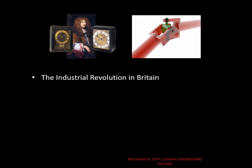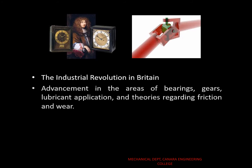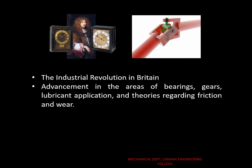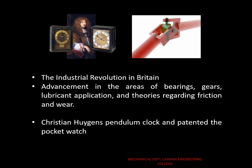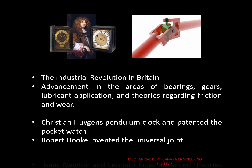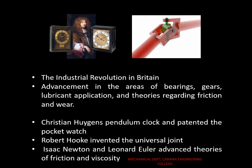Developments prior to the first Industrial Revolution were mainly confined to Britain, as Britain did not allow the export of machinery, skilled workers, or manufacturing techniques. The revolution brought advancements in bearings, gears, lubricant application, and theories on friction and wear. Christian Huygens invented the pendulum clock and patented the pocket watch, while Robert Hooke invented the universal joint.